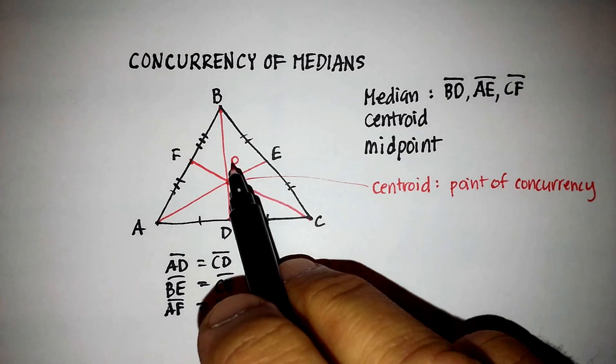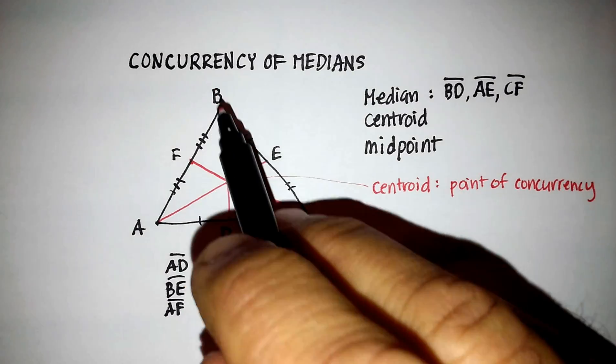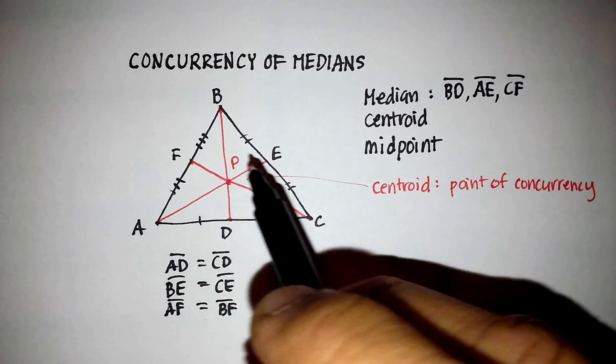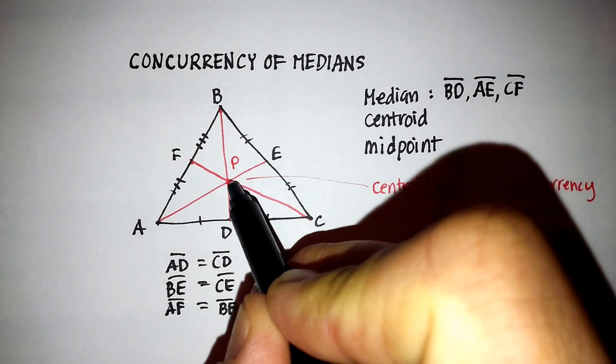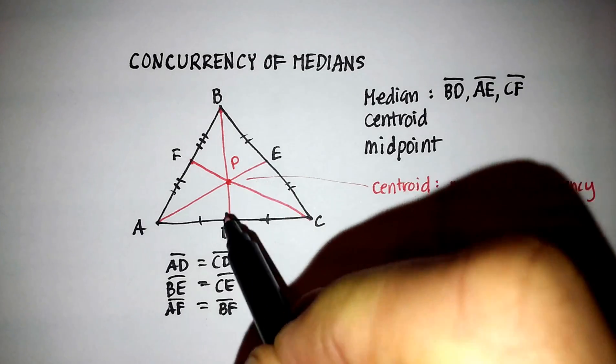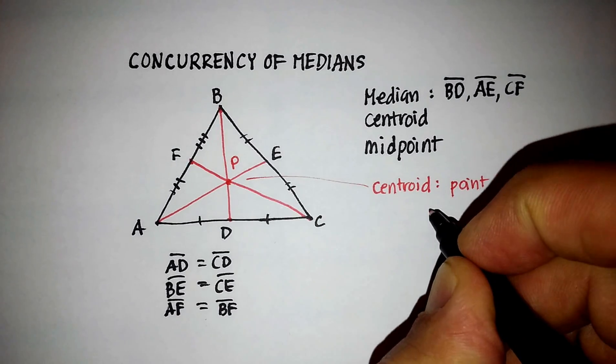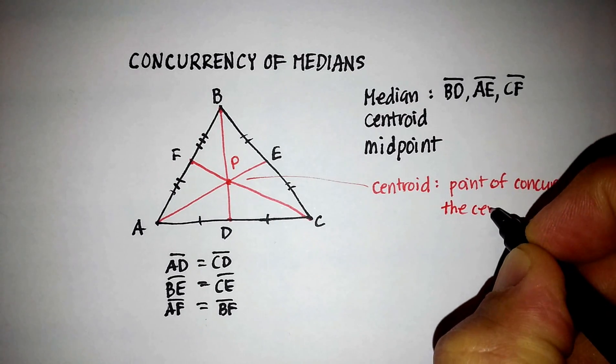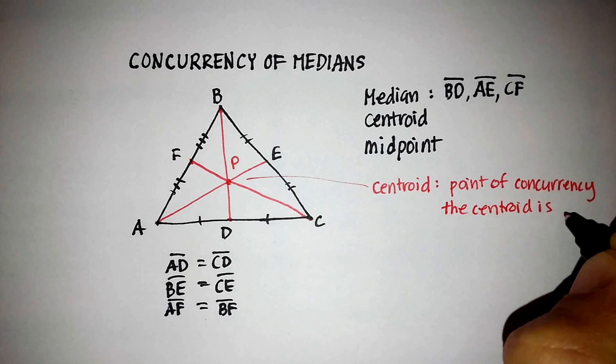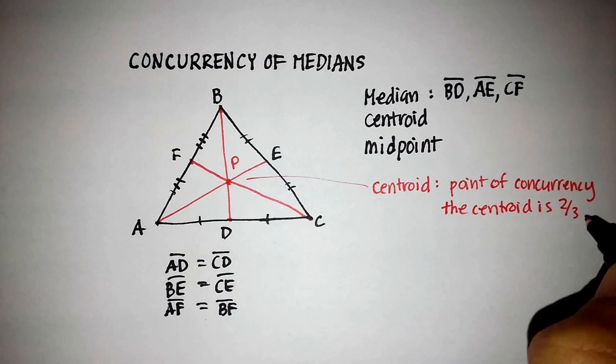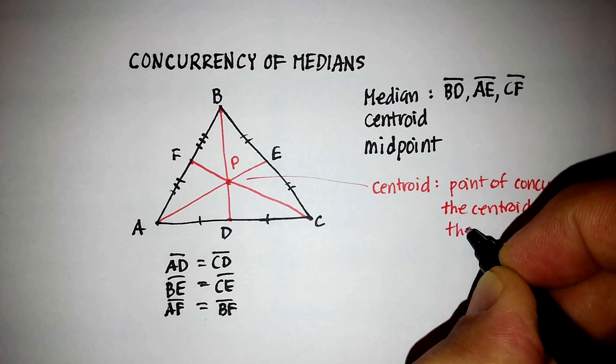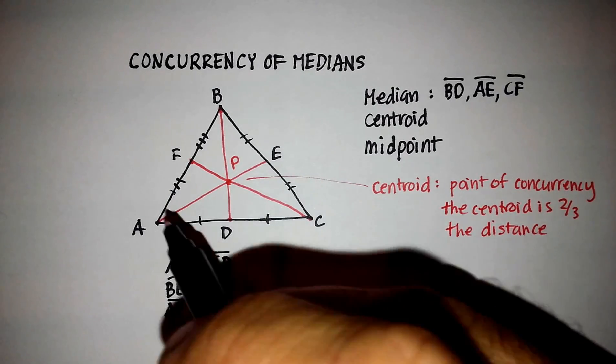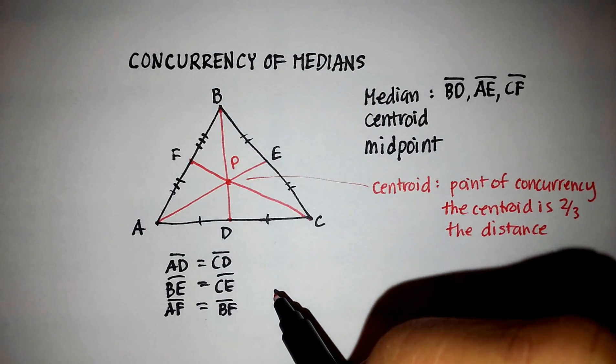And what are some other characteristics of this point? Basically, that point is two-thirds of the distance from each of the vertices to the midpoint of the opposite side. So it's two-thirds of the distance from here to here. All right. So the centroid is two-thirds the distance on each of those particular medians.